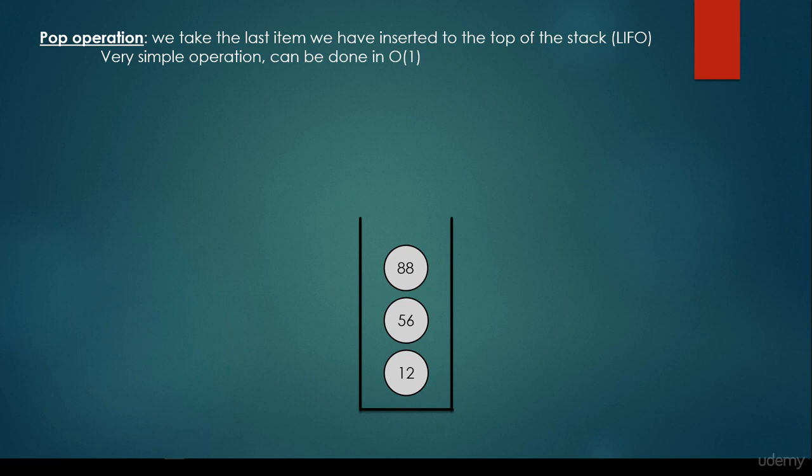What about the pop operation? We take the last item we have inserted to the top of the stack. This is the so-called LIFO structure, as I said earlier. So the last item we have inserted will be the first item we take out. It's a very simple operation, it can be done also in constant or O(1) time complexity. So if we call stack.pop, it's going to pop the last item we have inserted. And we inserted 88, so that's why it's going to be popped out of the stack. What if we call the pop method again? Then it's going to pop out the next item, which is 56.